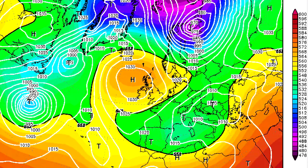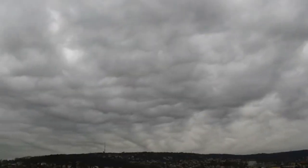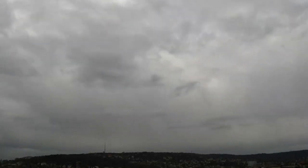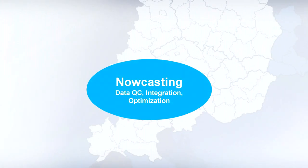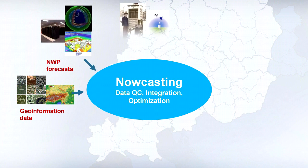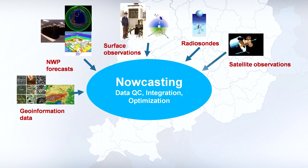Modern meteorological models can anticipate changes in weather patterns a few days in advance. For very local weather events arising in a short period of time like thunderstorms, however, it is in most cases only possible to specify the exact position and intensity of the event zero to six hours in advance. This forecasting methodology is called nowcasting. It combines observational data with information from meteorological models in order to get an exact and detailed image of the current weather and weather expected within the next few hours.